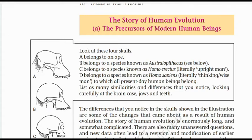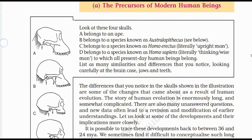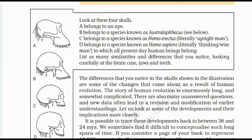The story of human evolution — the precursors of modern human beings. We'll be learning about how humans evolved. Look at these four skulls: A belongs to an ape, B belongs to a species known as Australopithecus, C belongs to a species known as Homo erectus, and D belongs to the species known as Homo sapiens, which means 'wise' or 'thinking' — intelligent, like we are. Today's humans are Homo sapiens.